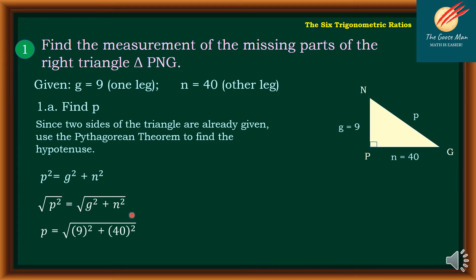Now substitute the value of g and n respectively. So I have p = √(9² + 40²). So p = √(81 + 1600). So p = √1681 or p = 41 units.